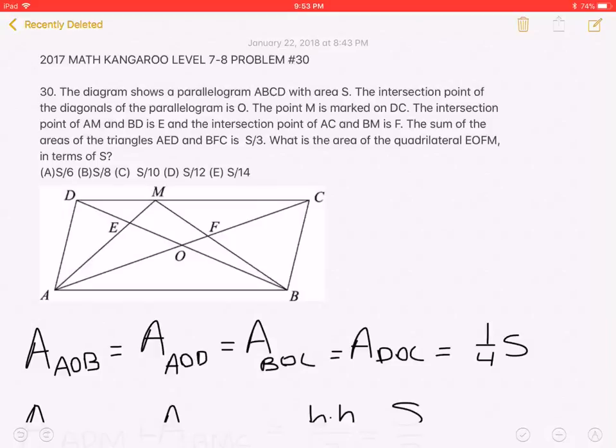The intersection point of AM and BD is E, and the intersection point of AC and BM is F. The sum of the areas of the triangles AED and BFC is S over 3. What is the area of the quadrilateral EOFM in terms of S?